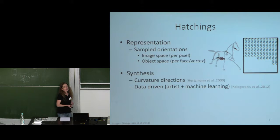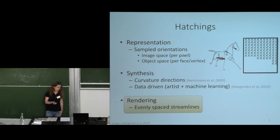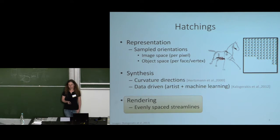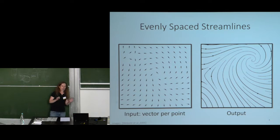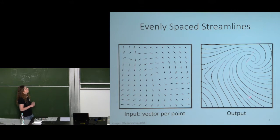Once you have a set of orientations — either in 2D image space or on the surface itself — you want to be able to render them by placing evenly spaced streamlines. Let's zoom in from the big pen-and-ink application and focus on the specific problem: the input is a vector field of orientations, and the output is an evenly spaced streamline illustration. This is also used in practice for vector field visualization.